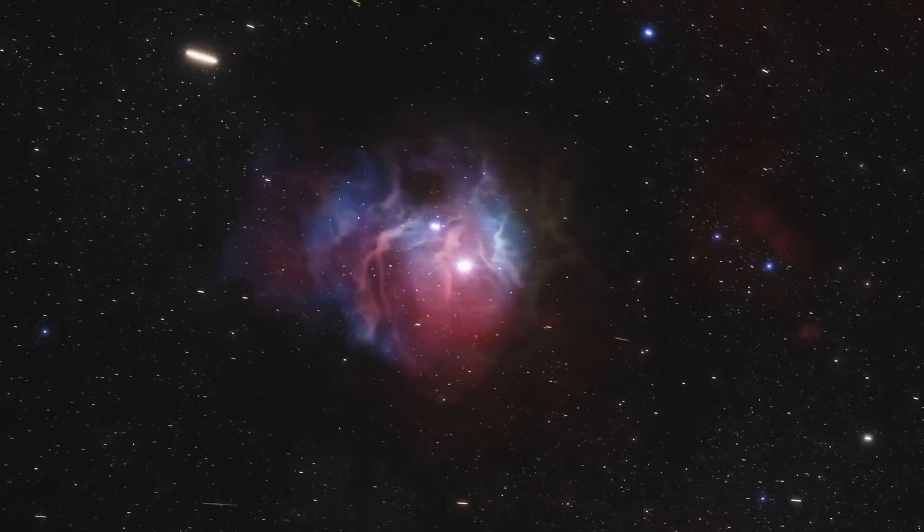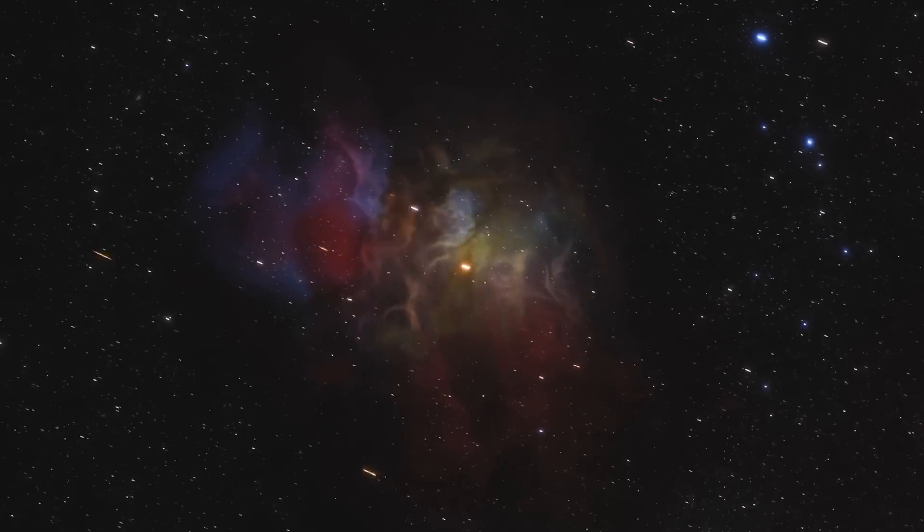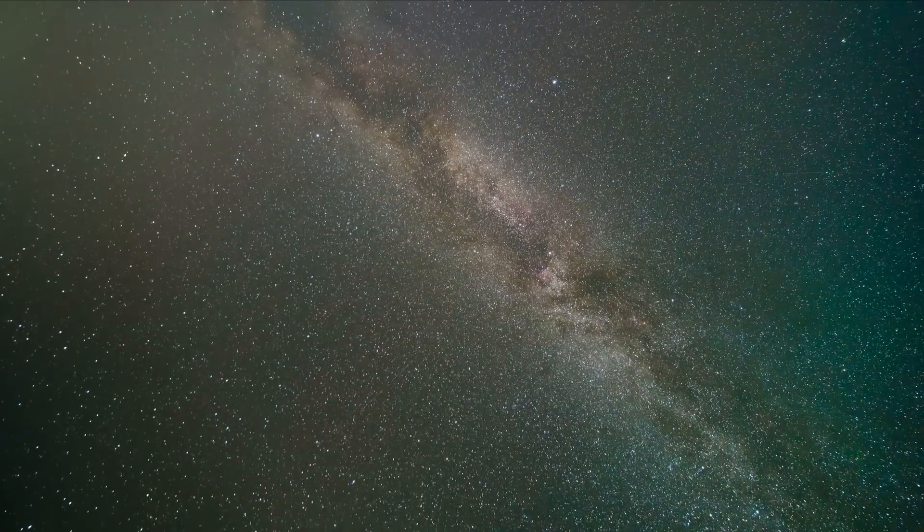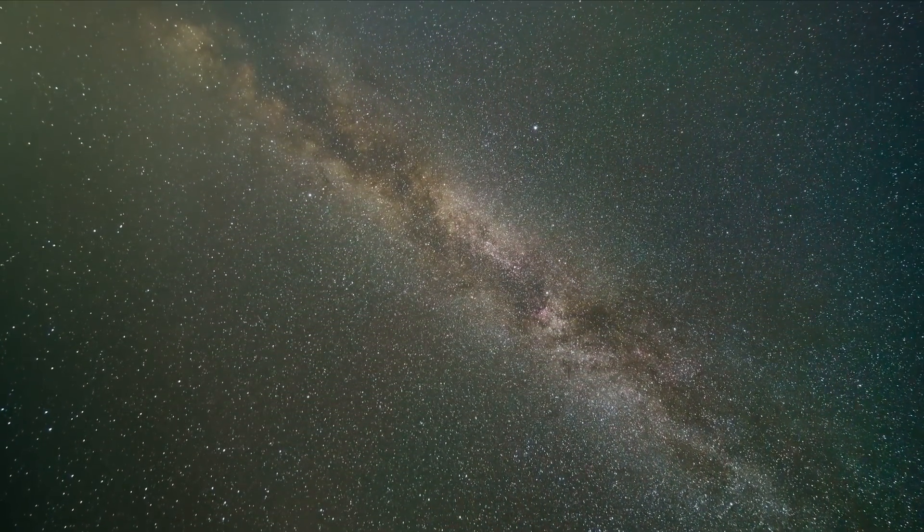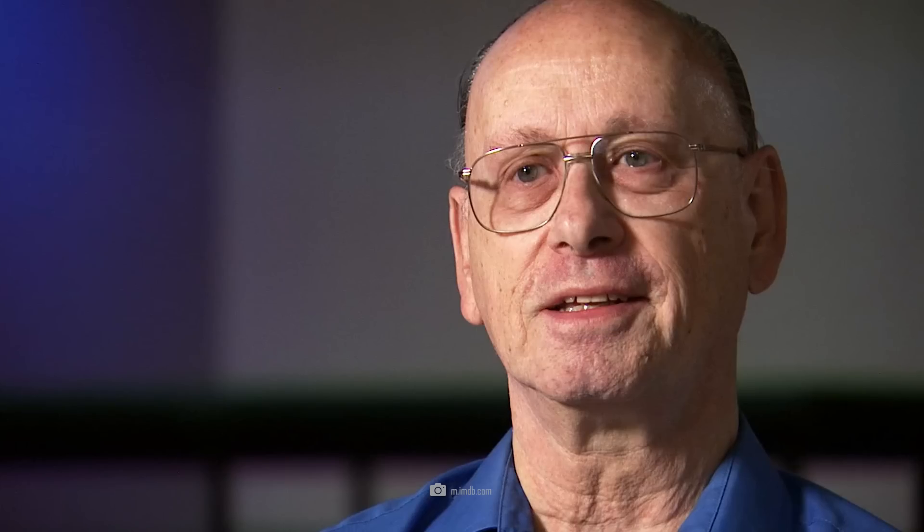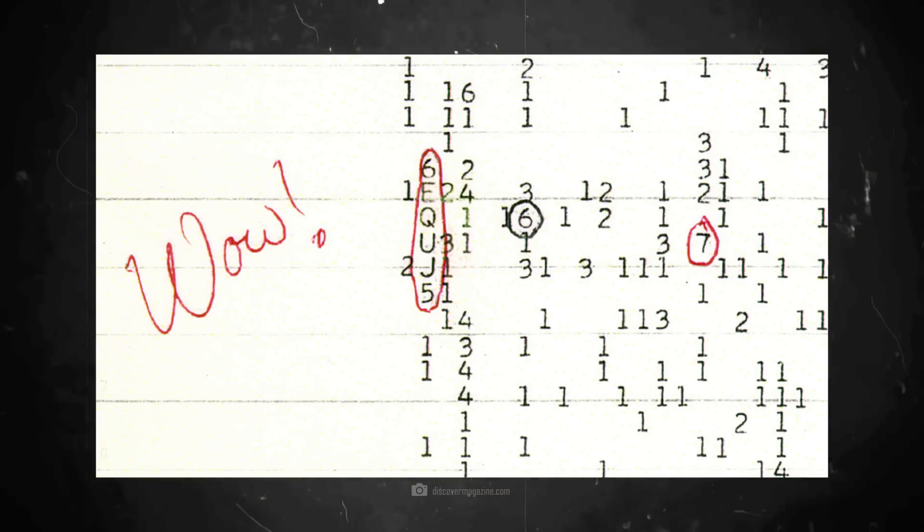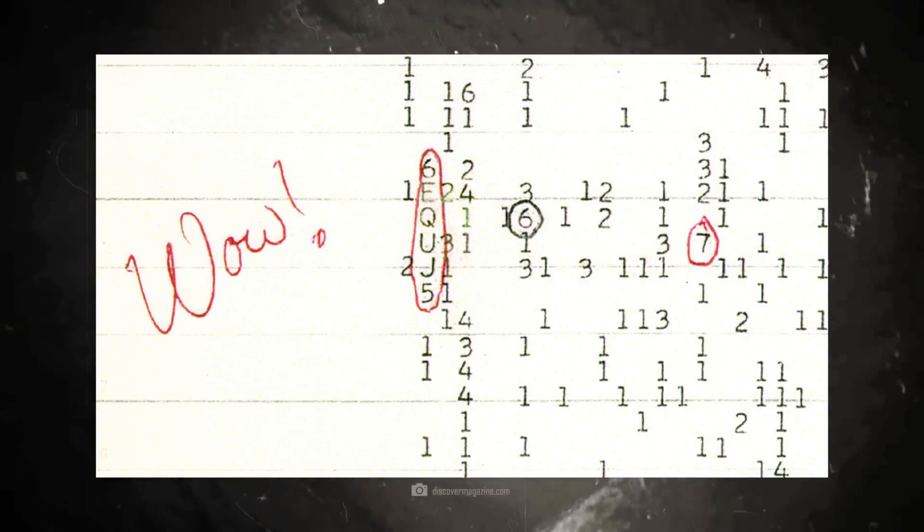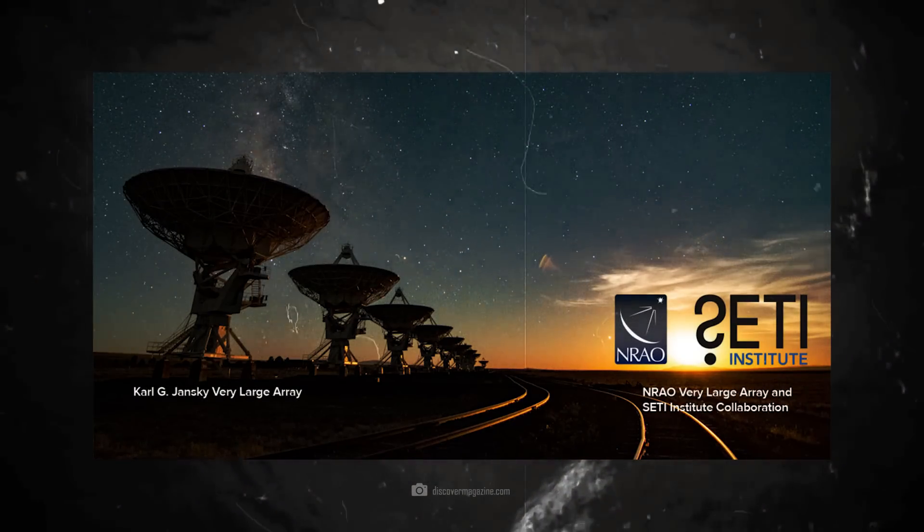Today, we have computers that scan the data and register anomalies immediately. In 1977, this was still done by hand. It was August 15th, when astronomer Jerry R. Amon was going through his list of frequencies and discovered something unusual. Amon simply wrote WOW next to the soundtrack and later showed it to his colleagues.